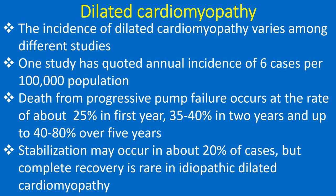The incidence of dilated cardiomyopathy varies among different studies. One study has quoted an annual incidence of 6 cases per 100,000 population. Death from progressive pump failure occurs at the rate of around 25% in the first year, 35-40% in 2 years, and up to 40-80% over 5 years. Stabilization may occur in about 20% of cases, but complete recovery is rare in idiopathic dilated cardiomyopathy.